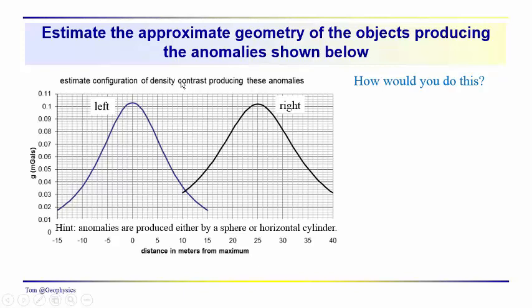Now, so here we have two anomalies. One is associated with a buried, equidimensionally shaped object. The other is associated with a horizontal cylinder. So we have two anomalies, one's produced by a sphere, one's produced by a horizontal cylinder. Can you tell which is which? So, how would you do this? Think about that for a moment.